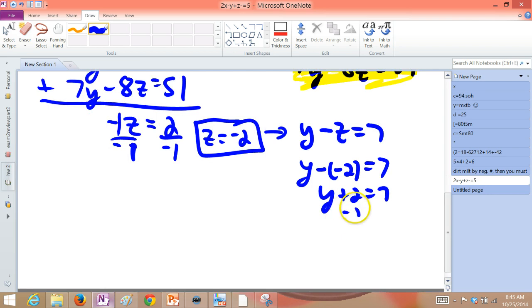So what you get is y plus 2 is 7, or that y, subtracting 2 over, is 5. So we have our y, we have our z. Well, let's go get the x.